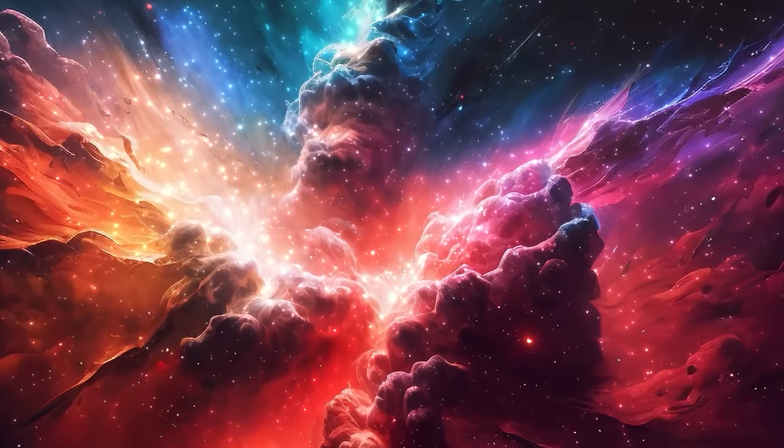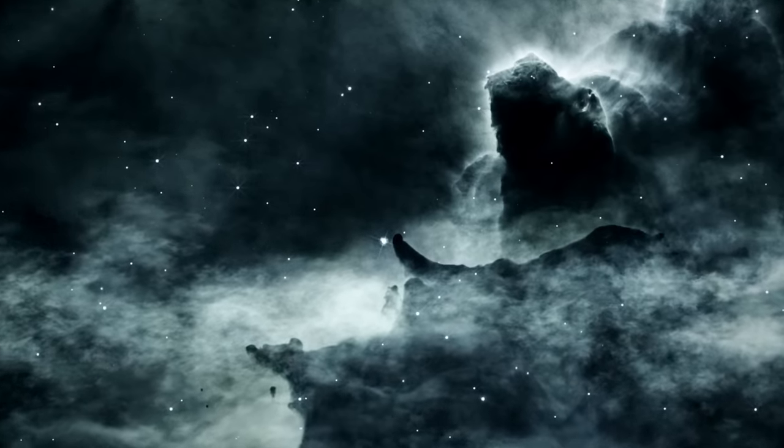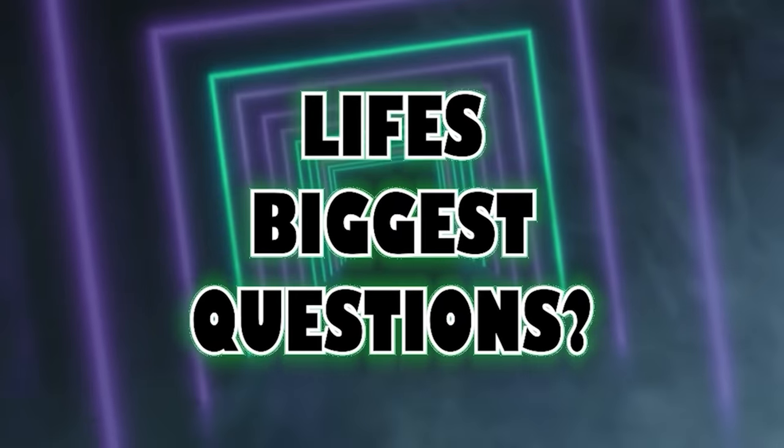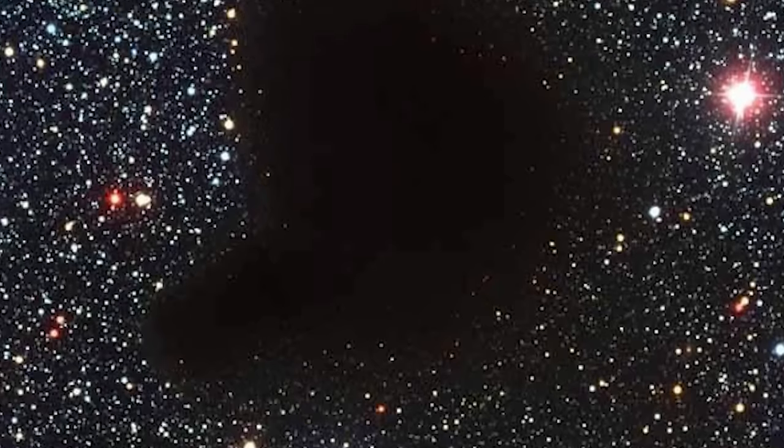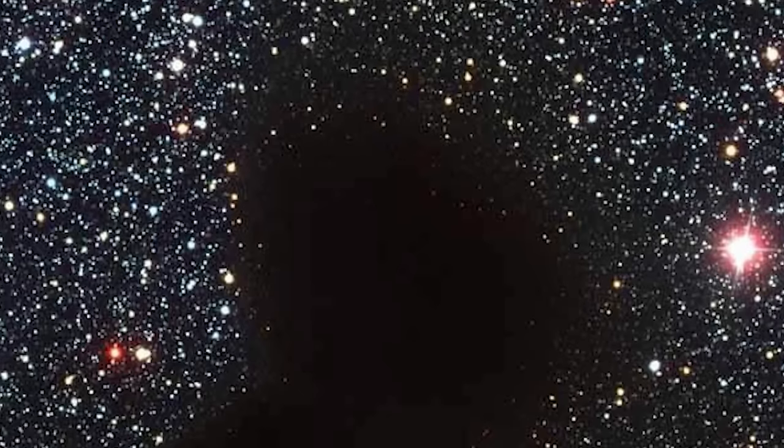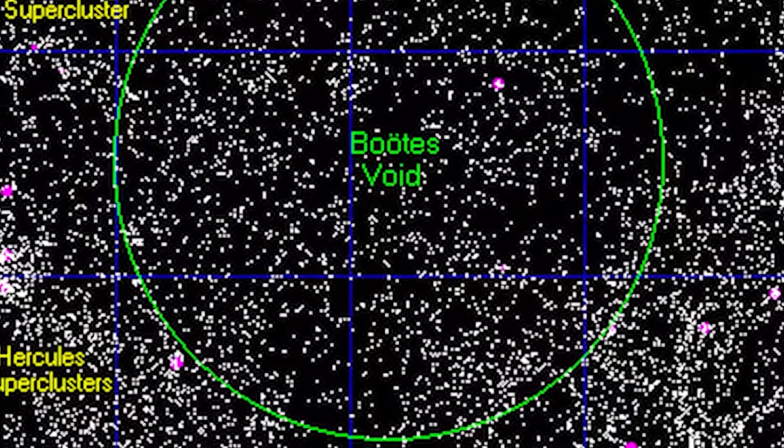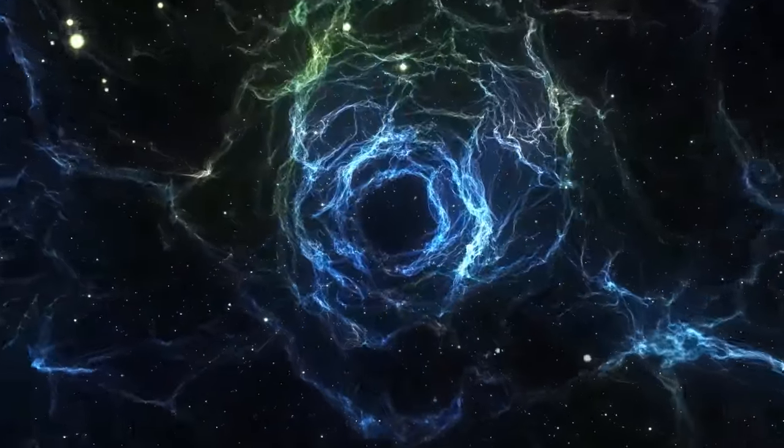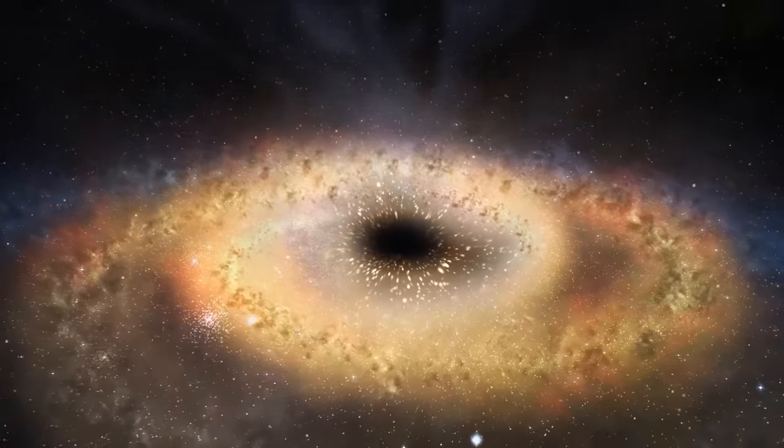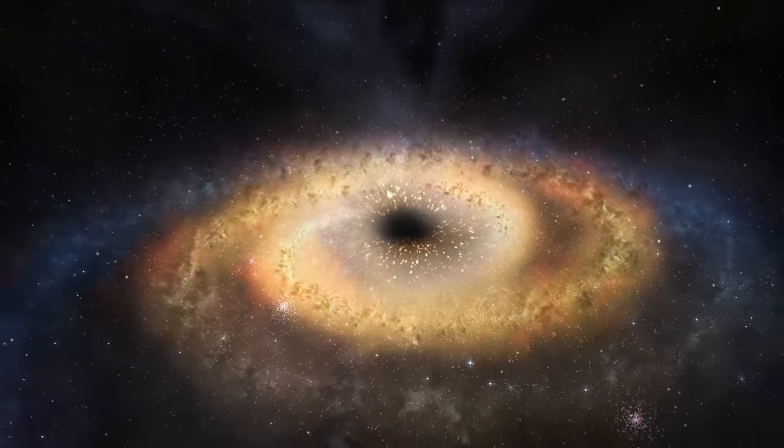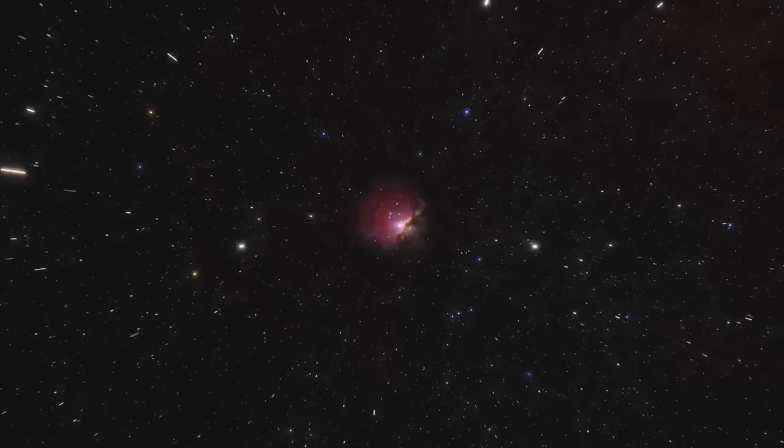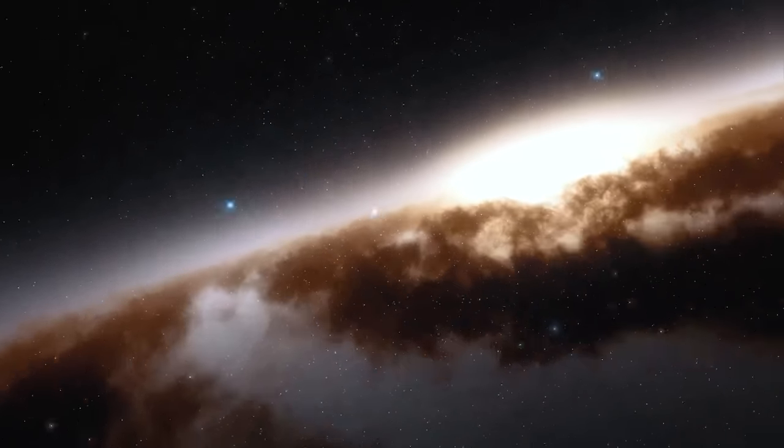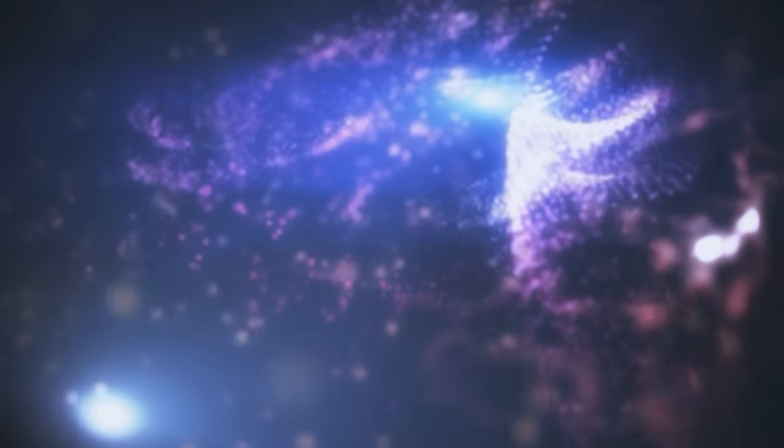Ever gaze up at the stars and think just what is out there? The vastness of space has always held mysteries that, despite our best efforts, continue to elude our understanding. Let's journey through some of the universe's most confounding, unexplained mysteries. The Boötes Void, often referred to as the Great Nothing, stands as one of the largest and most mysterious voids in the universe. This immense expanse is situated in the Boötes constellation, giving it its evocative name. With a diameter of approximately 330 million light years, the Boötes Void's vastness is unparalleled. To help put this into perspective, you could fit our Milky Way galaxy into this space around 2000 times.